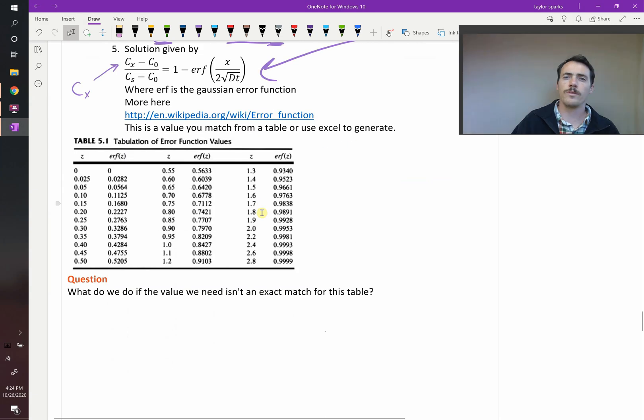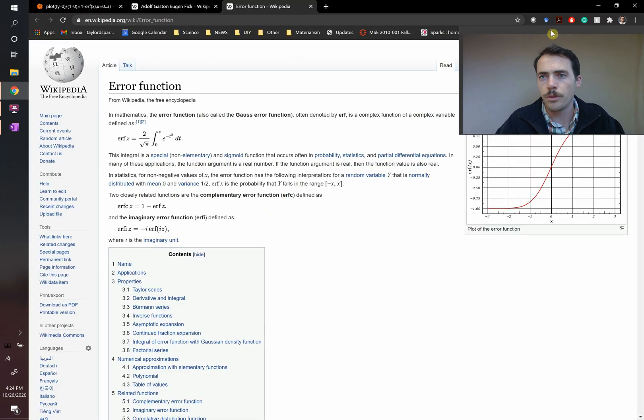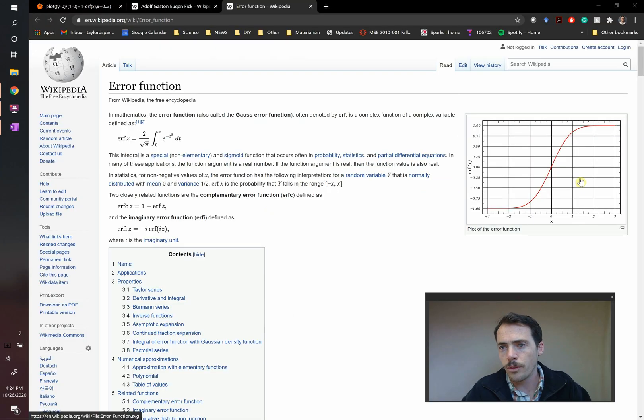So if you haven't used the error function before, you can look up these values from a table. If the value inside of the error function is z, and that value is 1.3, then the value of the error function would be 0.934. You could see that from this chart. If you go to 1.3 over here, 1.3, you're all the way up here at about 0.934. So it's just reading off of this plot.